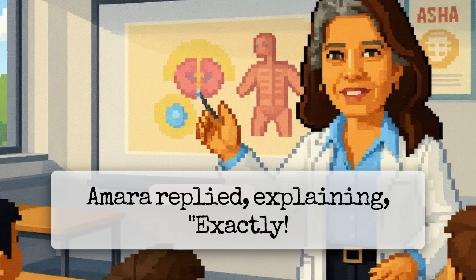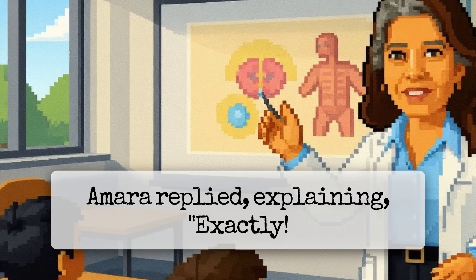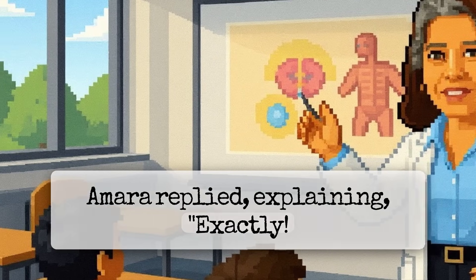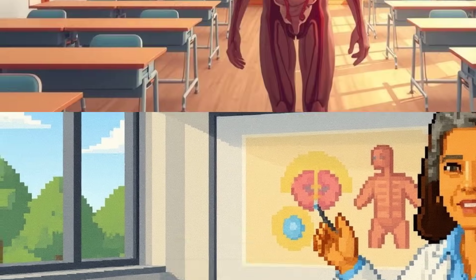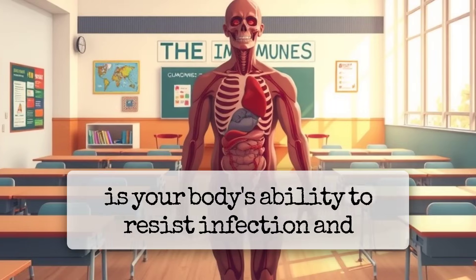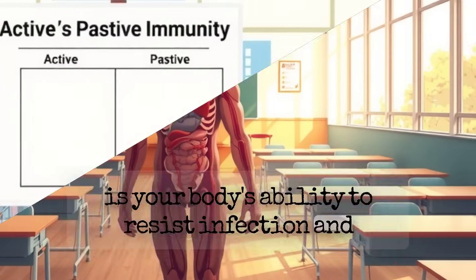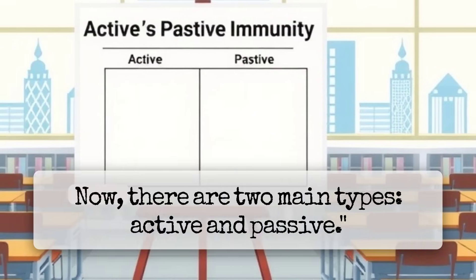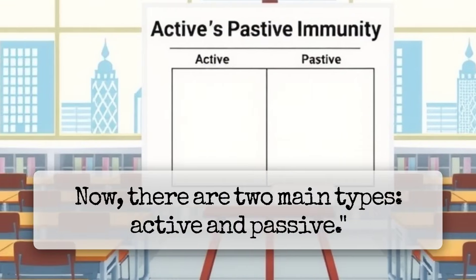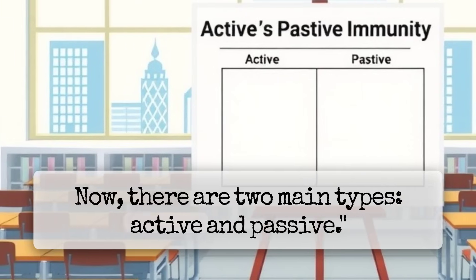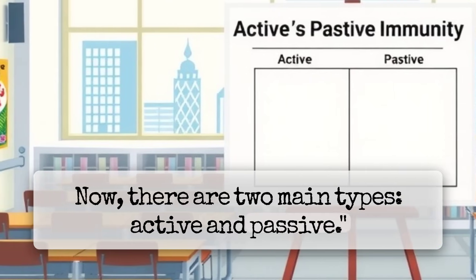Dr. Amara replied, 'Exactly. Immunity is your body's ability to resist infection and disease. Now, there are two main types: active and passive.'